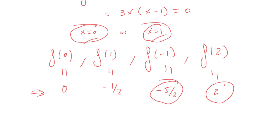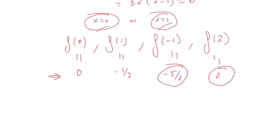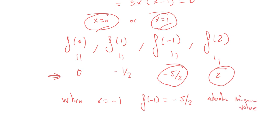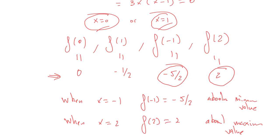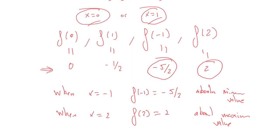The absolute minimum value is minus 5/2, occurring when x equals minus 1. The absolute maximum value is 2, occurring when x equals 2. Graphing the function in GeoGebra would confirm this result.